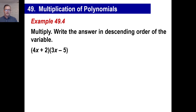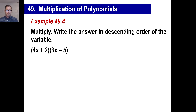Let's try another one. This looks familiar — 3x minus 5. We'll try this one. Pause it and try it. We do 4x times 3x, which is 12x squared. 4x times negative 5 is negative 20x. And we are done with this part.